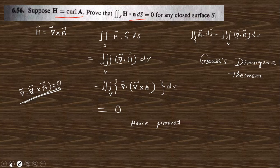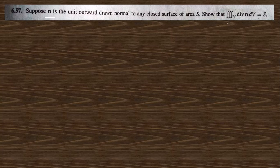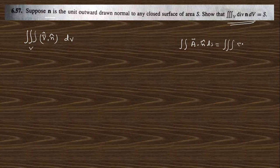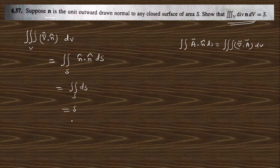Go to the next one. Question 6.57 says that suppose n̂ is a unit outward drawn normal to any closed surface S. The volume integral of divergence of n̂ dV: from the Divergence Theorem, A vector dot n̂ dS is nothing but the volume integral of divergence of a vector dV. Here, divergence of n̂ means if we go backward in the surface integral, this becomes n̂ dot n̂ dS. Since n̂ dot n̂ = 1, this is the surface integral of dS, which equals S — hence proved.